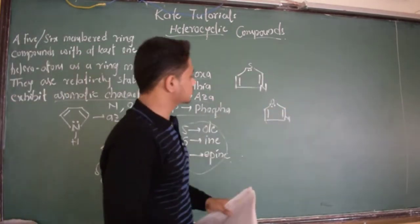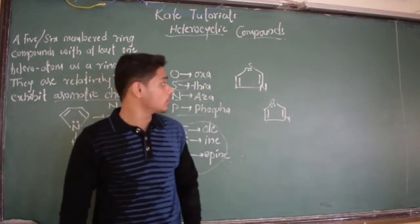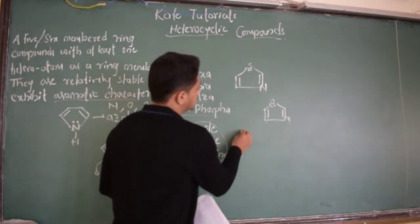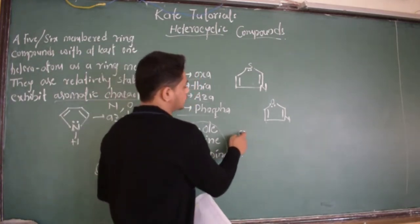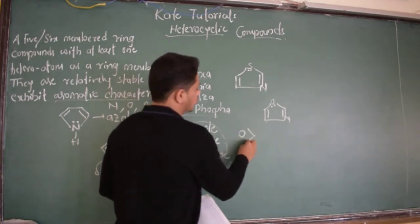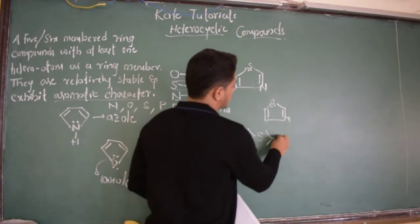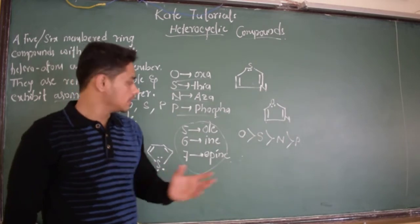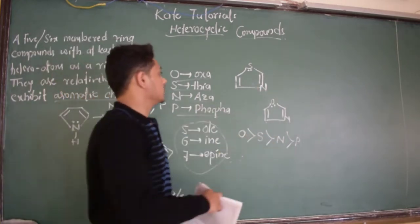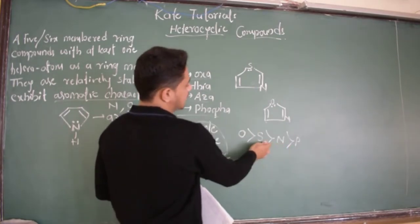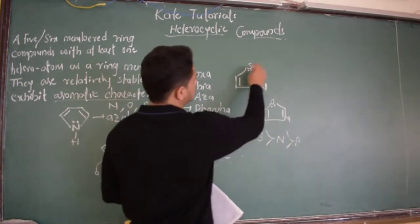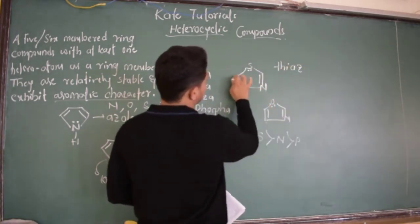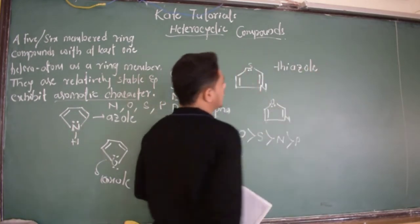If there are two hetero atoms, how do we assign numbering preference? Oxygen gets first preference, followed by sulfur, then nitrogen, and finally phosphorus. So for a compound with sulfur and nitrogen, sulfur gets first preference: thia, then aza, and it is 5-membered, so 'ole' — giving 'thiazole.' For a compound with oxygen and nitrogen, oxygen gets first preference: ox, then az, ole — giving 'oxazole.'